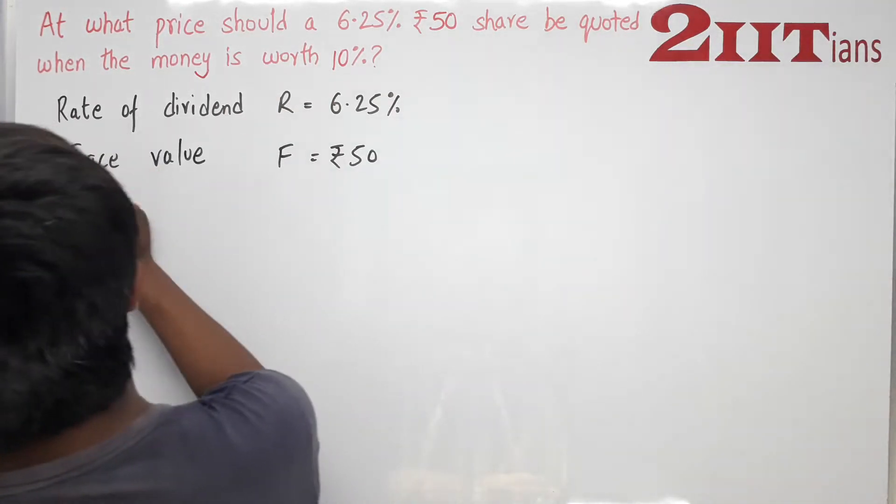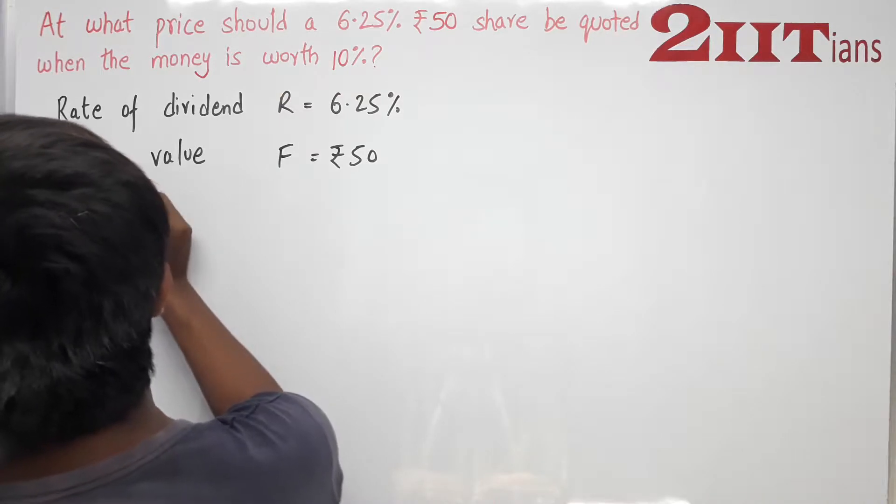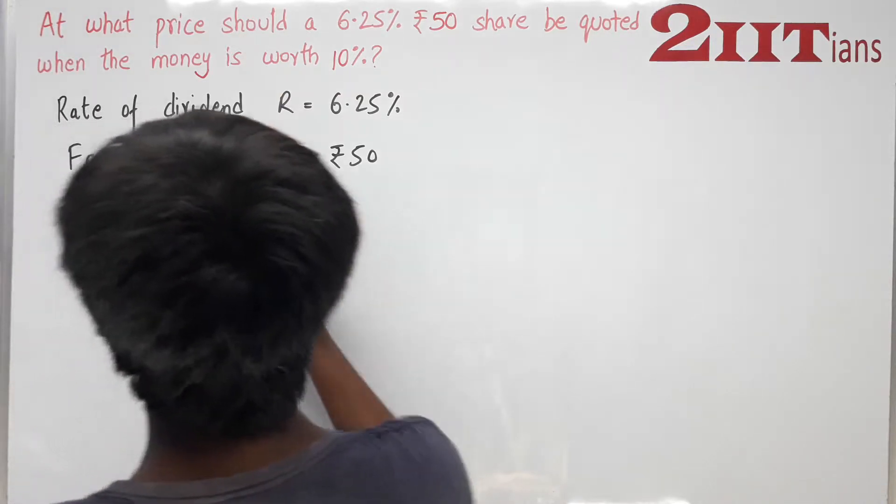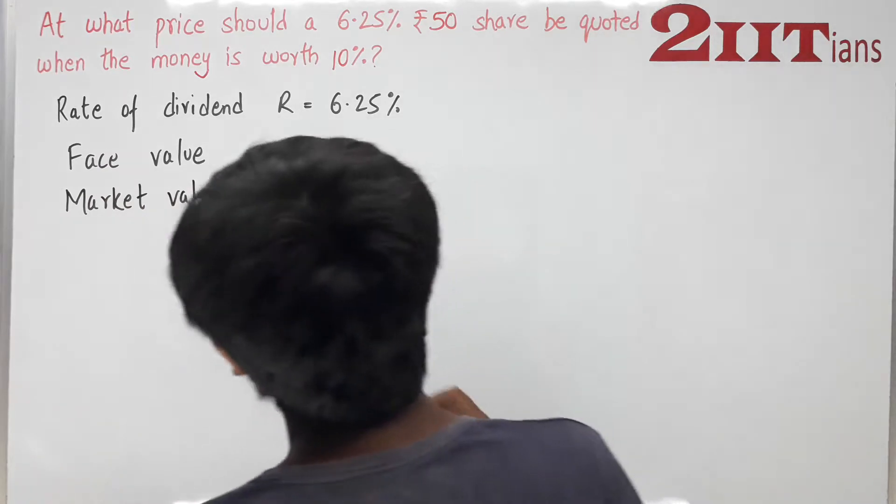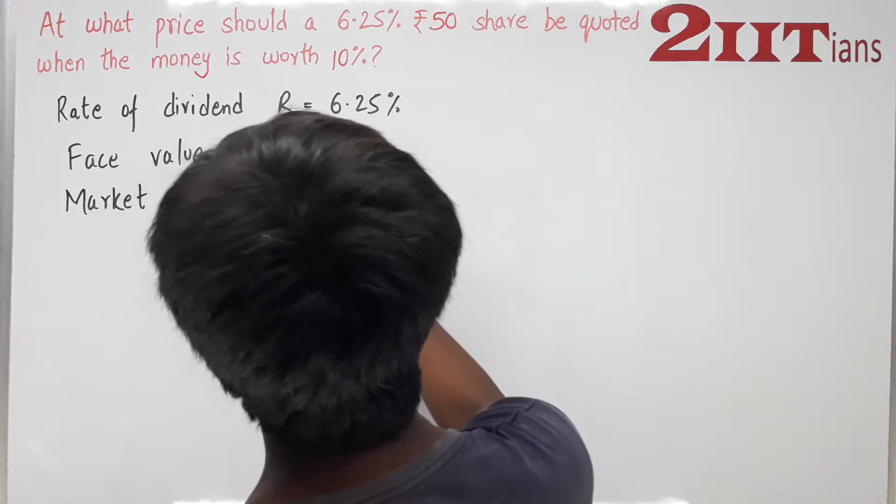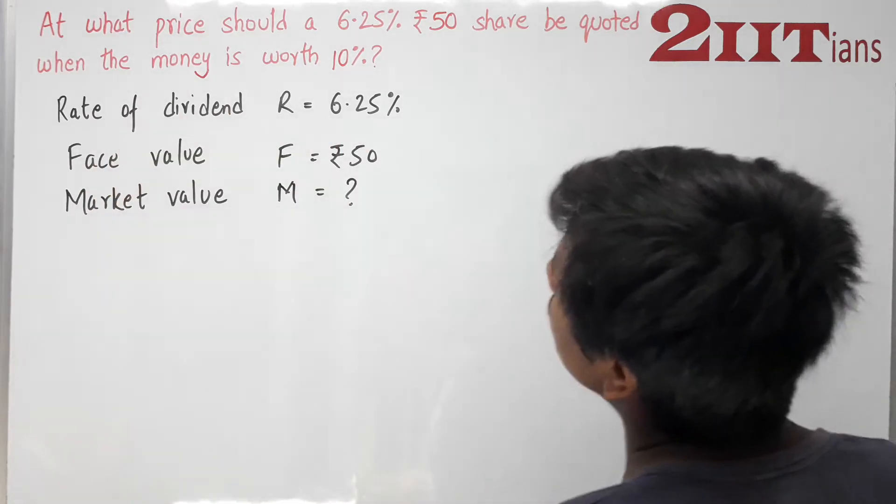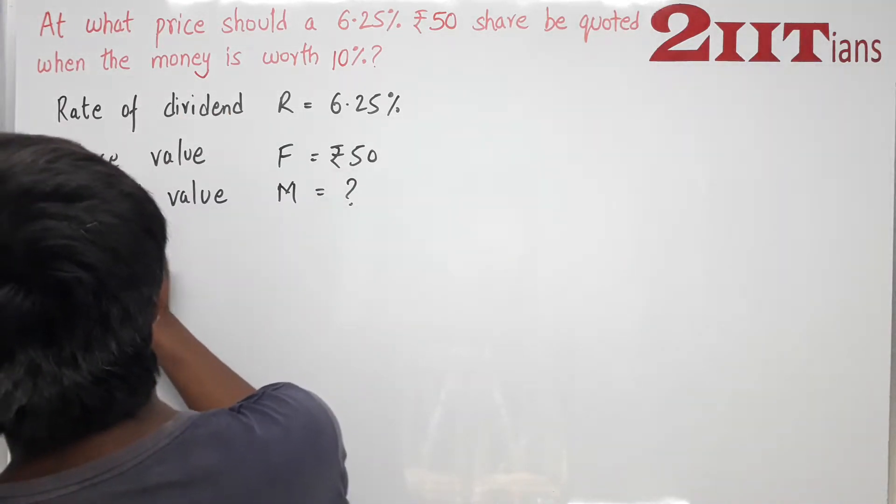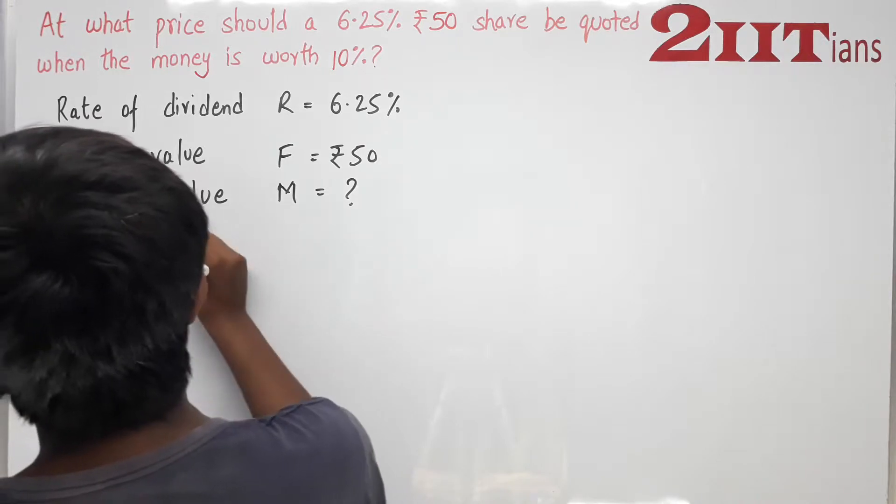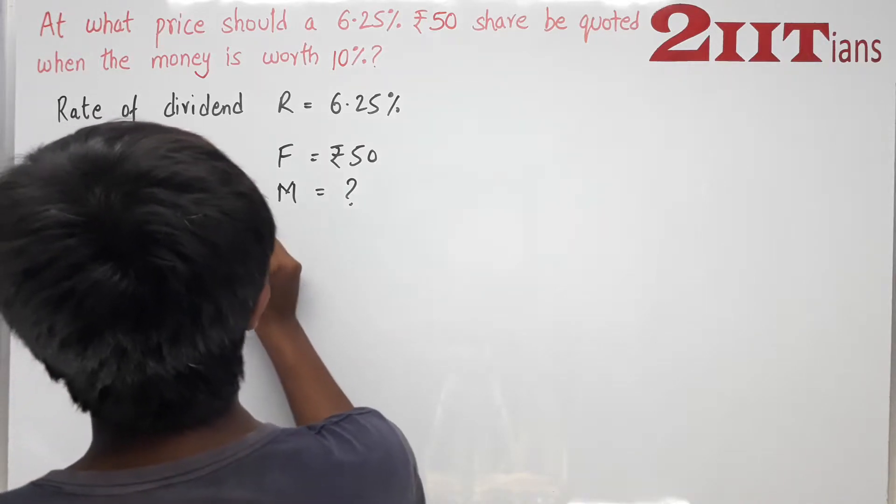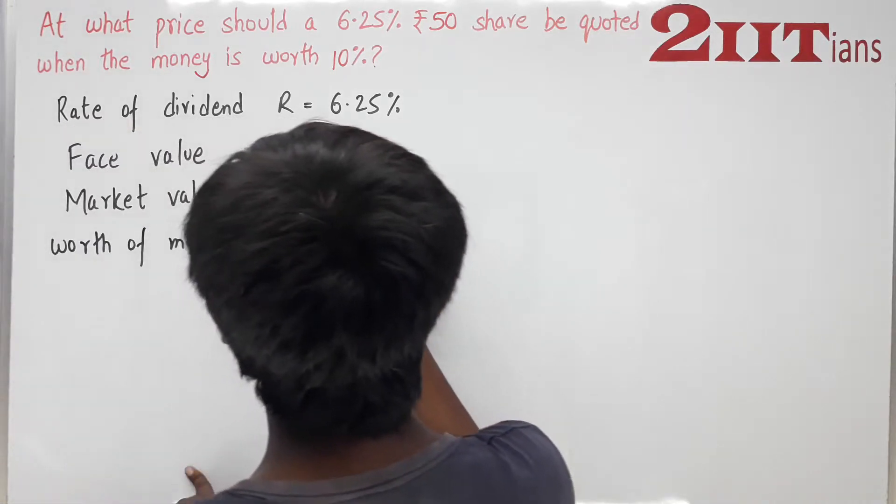The price in the market is called the market value. When the money is worth 10%, worth of money is equal to rate of return.